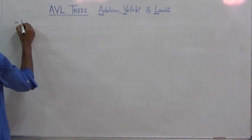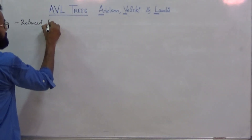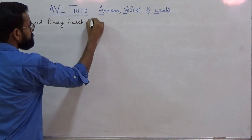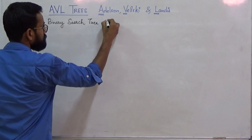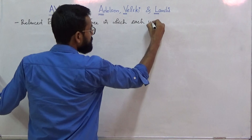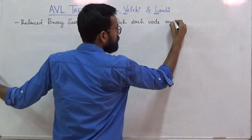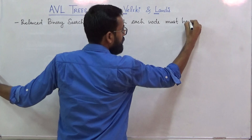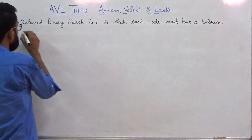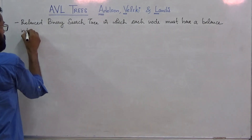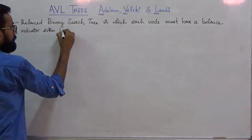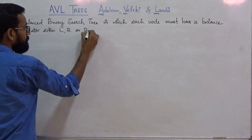An AVL tree is a balanced binary search tree in which each node must have a balance indicator, either L, R, or B.